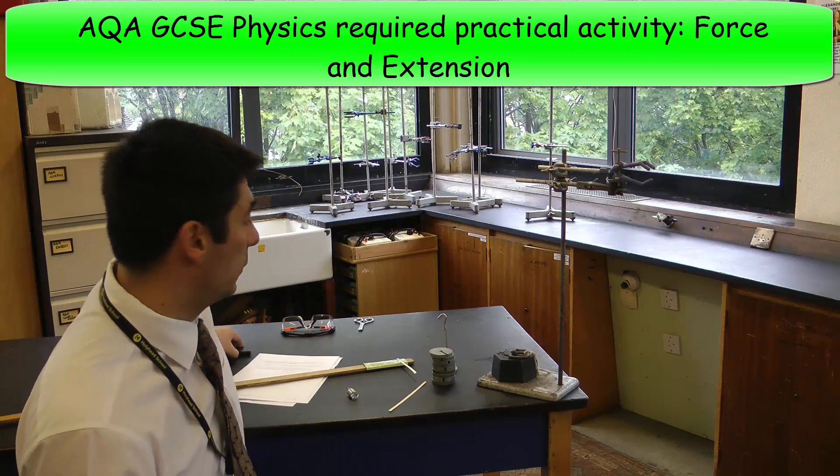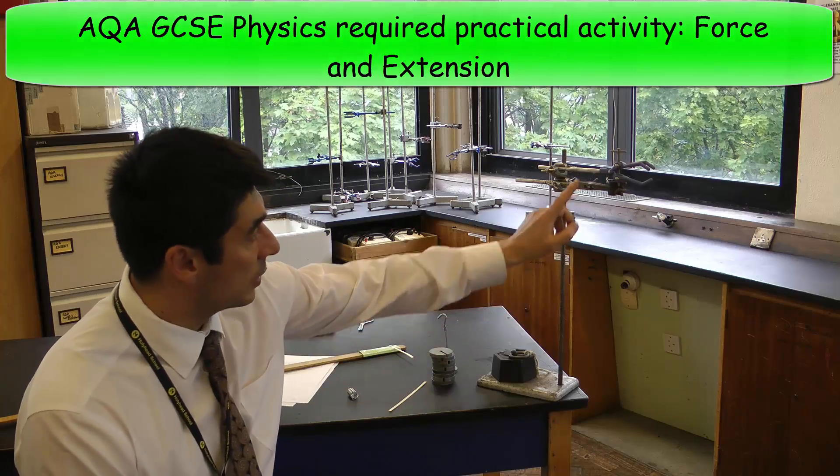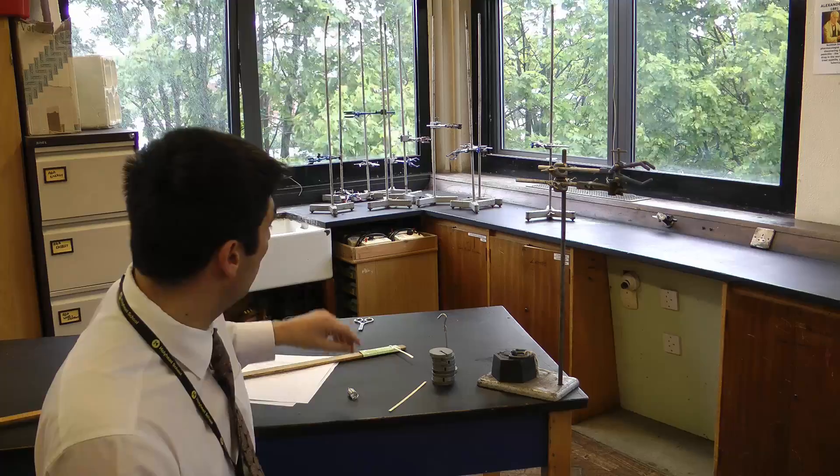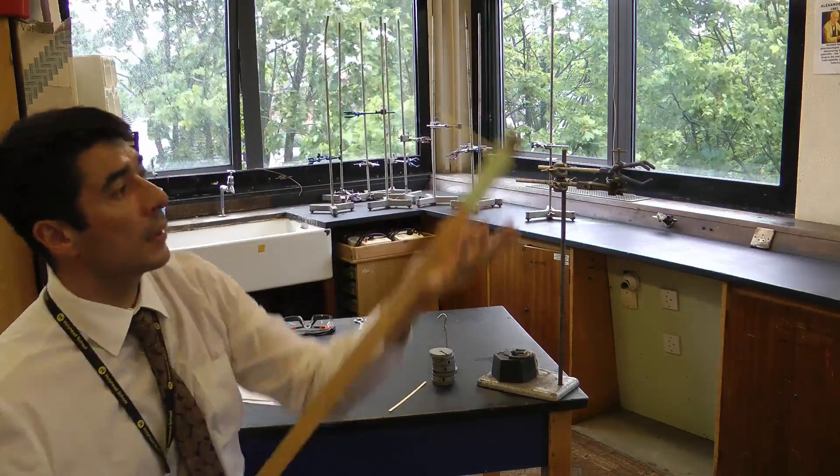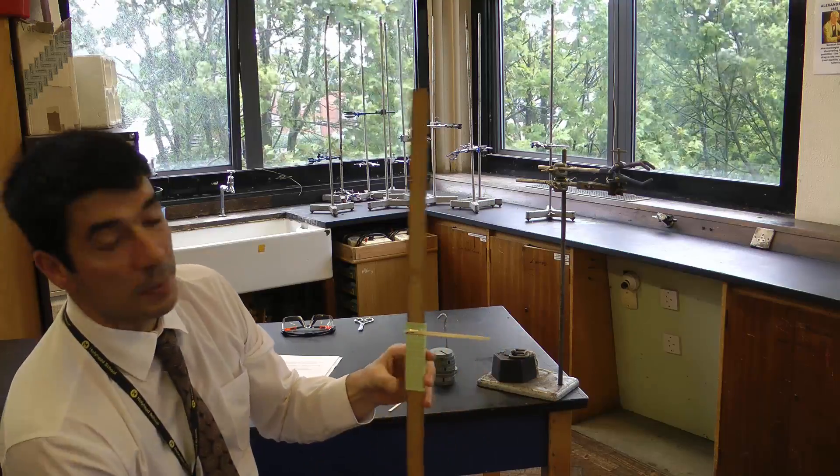This is the AQA Required Practical for Hooke's Law. You need several bits of kit: a clamp stand with two bosses, a meter ruler, and on this meter ruler we've got a pointer that's been attached to the ruler.